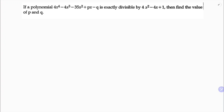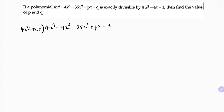The polynomial 4x⁴ minus 4x³ minus 35x² plus px minus q is exactly divisible by 4x² minus 4x plus 1. Find the value of p and q. We will perform polynomial long division. If it is exactly divisible, then the remainder should be 0.